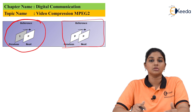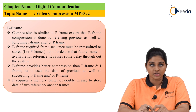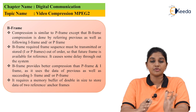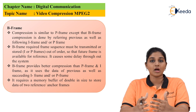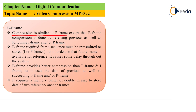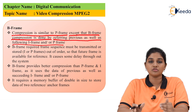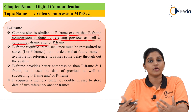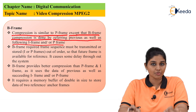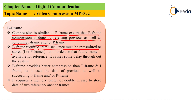The B-frame stands for bi-directional predictive coded frame. As its name indicates, it is formed by using either preceding as well as following P-frames, or preceding as well as following I-frames. Compression is similar to P-frame, except that B-frame compression is done by referring to both previous and following I-frames or P-frames. B-frame requires that the frame sequence be transmitted or stored out of order so that the future frame is available for reference.